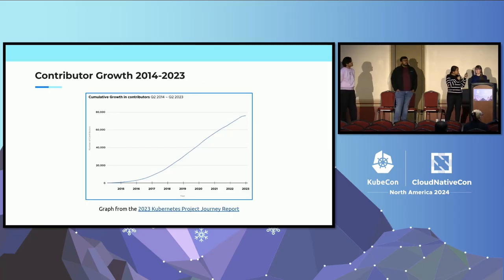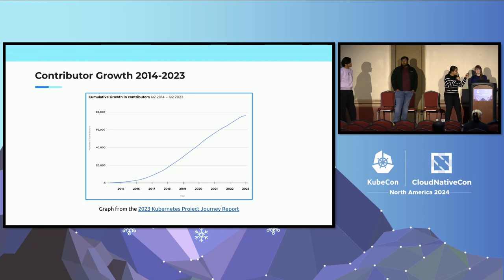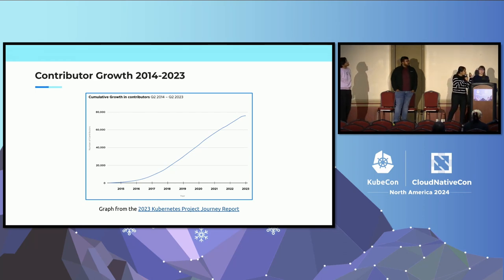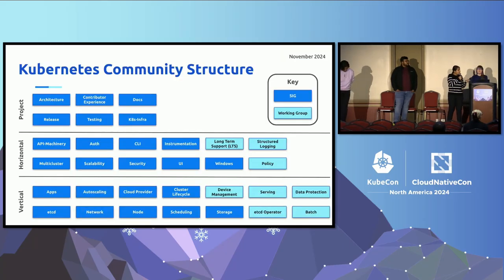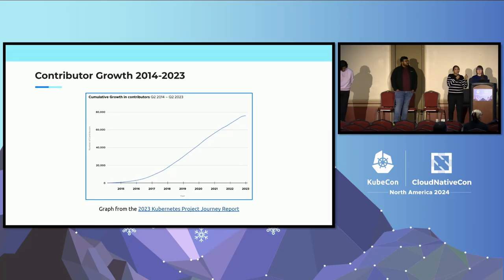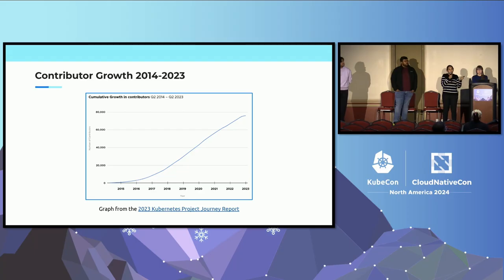This graph shows how we have grown over the years — starting from 2015, and by 2023 we are around 70,000 to 80,000 contributors. This is the scale of growth for the Kubernetes project, and we need help. We want more contributors, and we have resources to help people get involved.